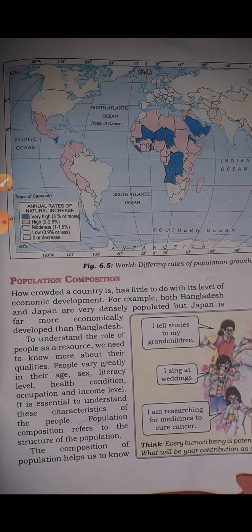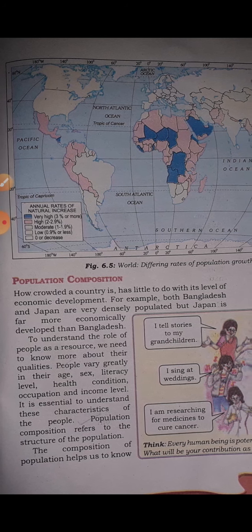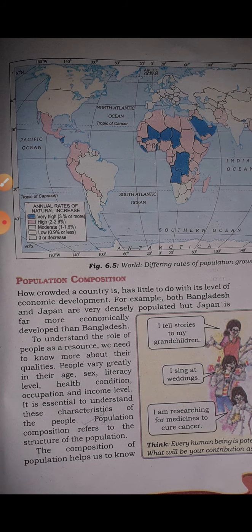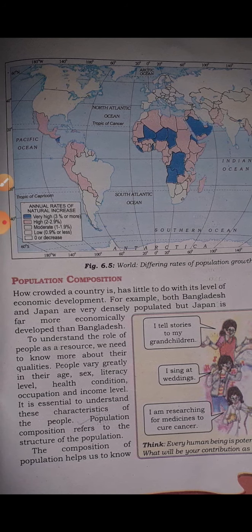We also covered population change — the change in the number of people during a specific time period. The factors responsible for population change are birth rate, death rate, and migration. We also discussed emigrants and immigrants as the two components of migration.